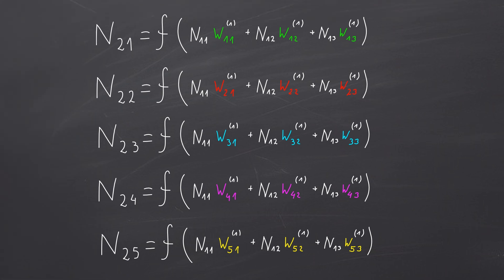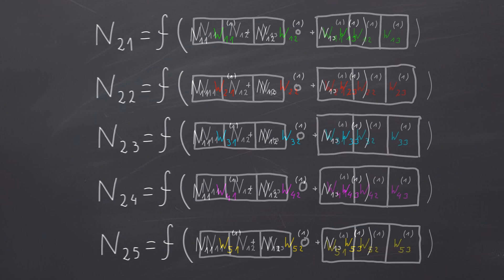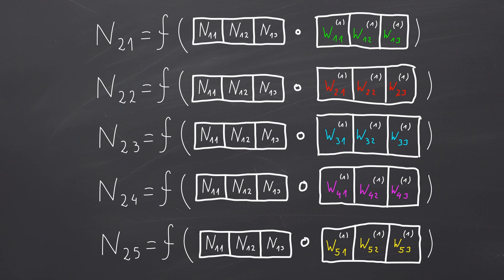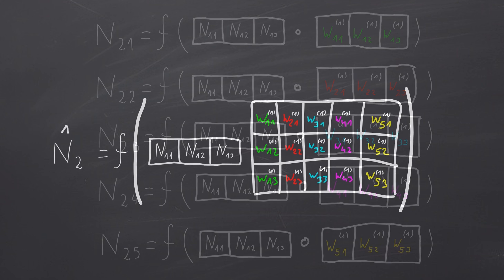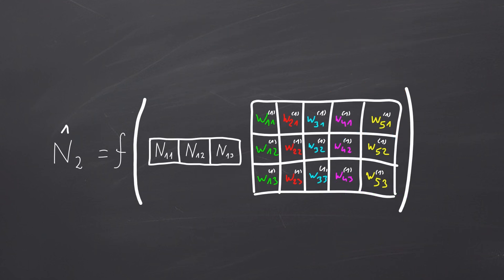This shows how the calculations from the first layer are unwrapped. The only variation between formulas for each neuron is the set of weights assigned to it. This process can be simplified using a dot product between two vectors. Dot products involve multiplying corresponding elements from two vectors with the same index and summing the results. To streamline this further, we can express the operation as matrix multiplication.